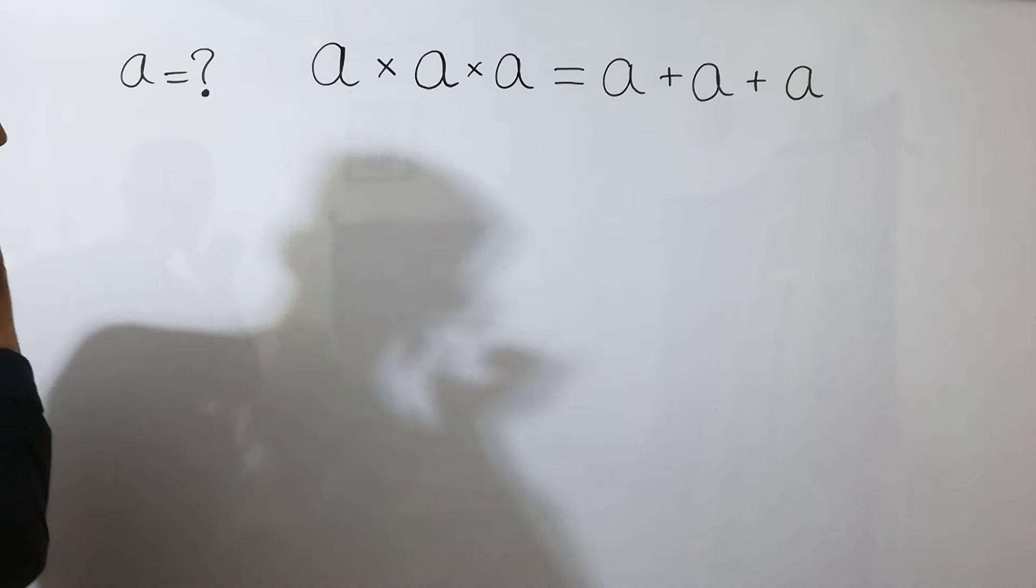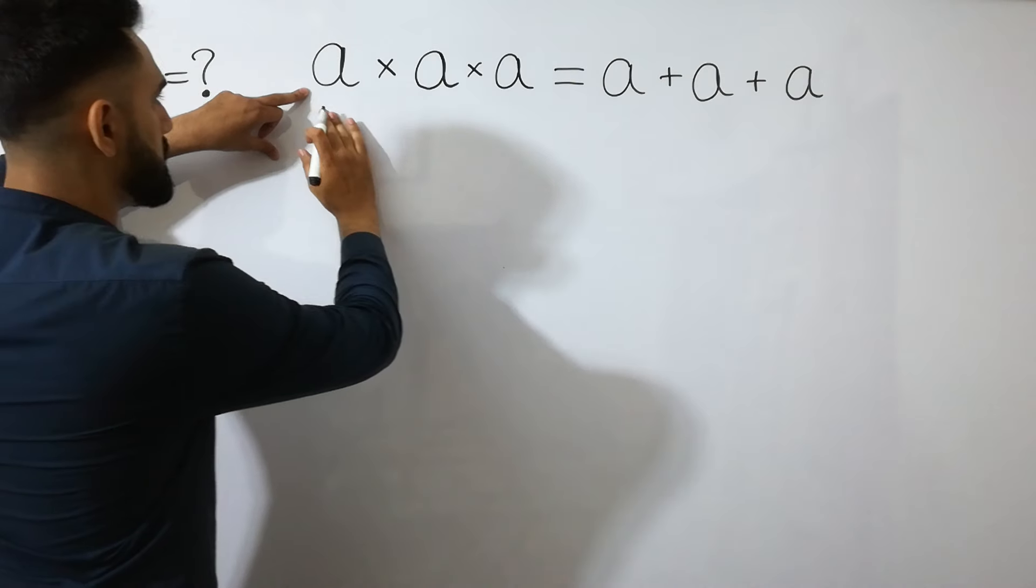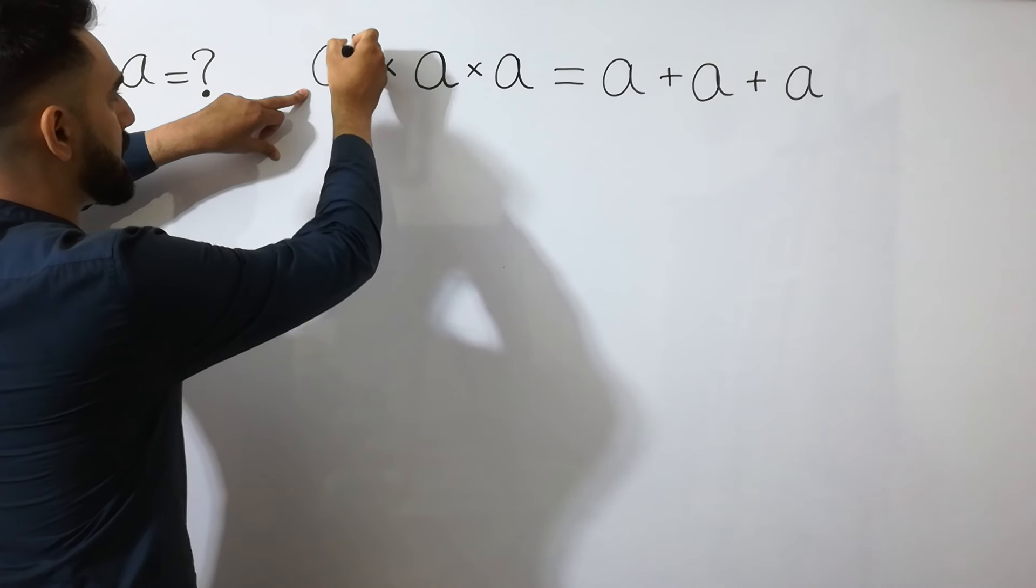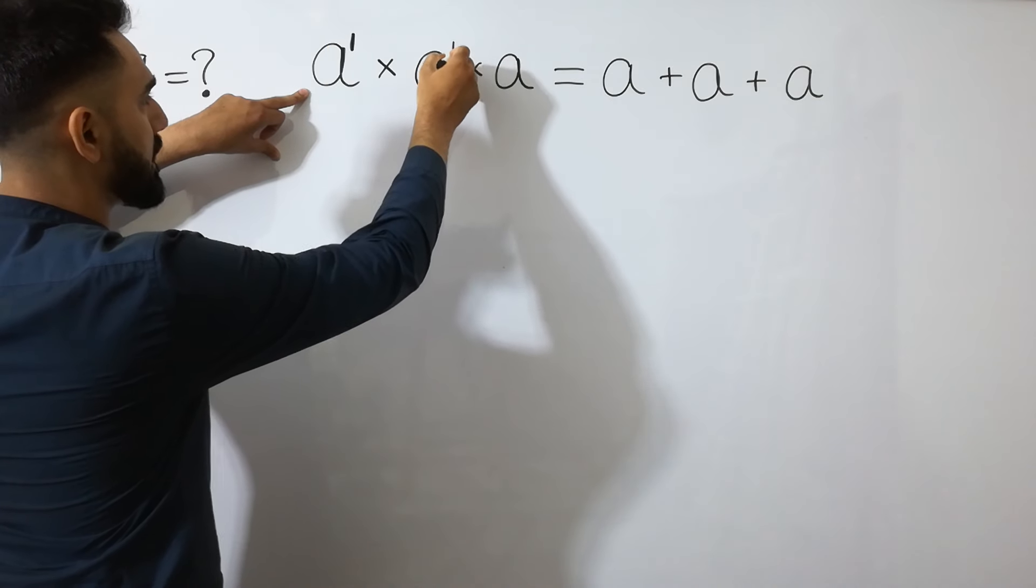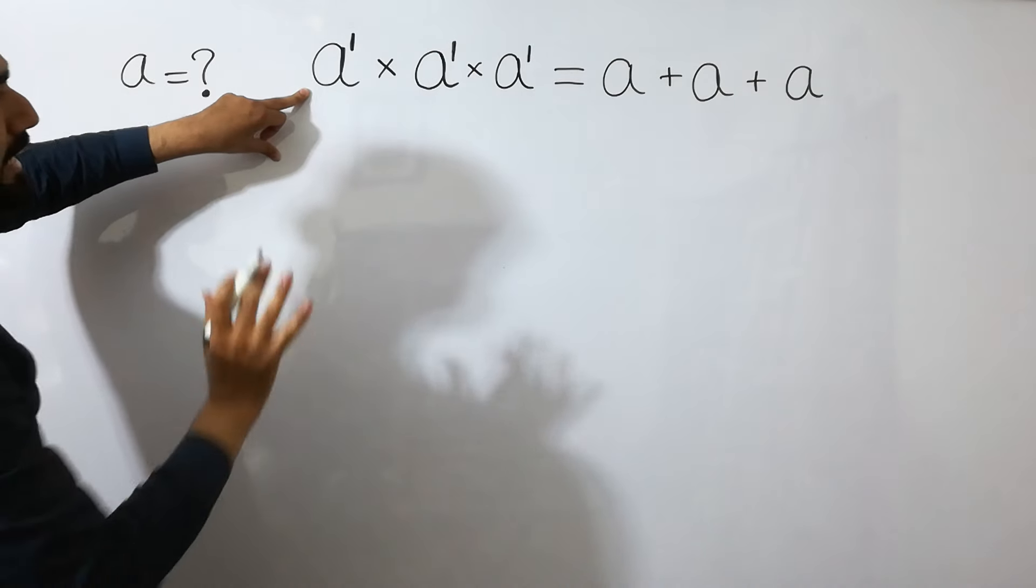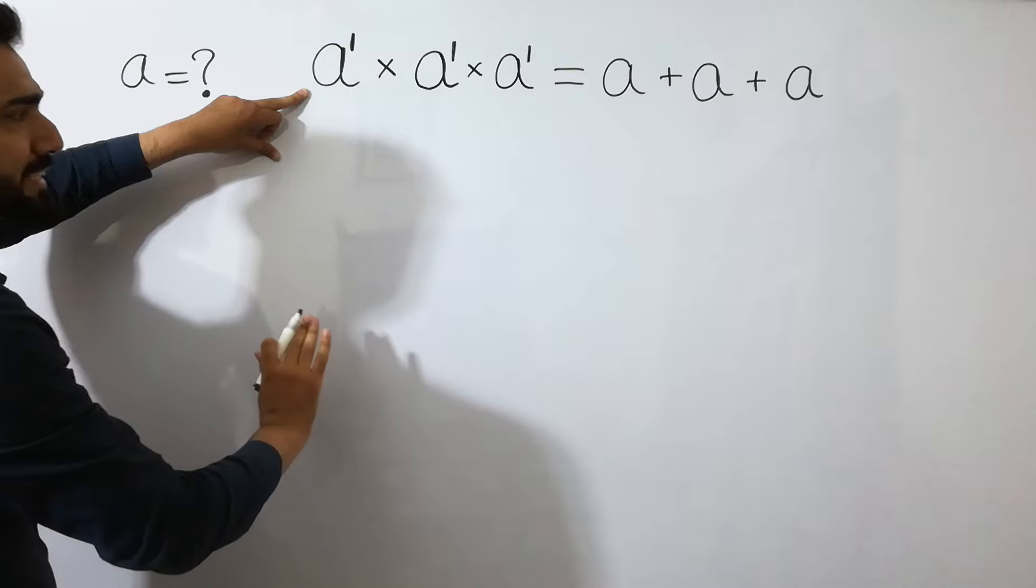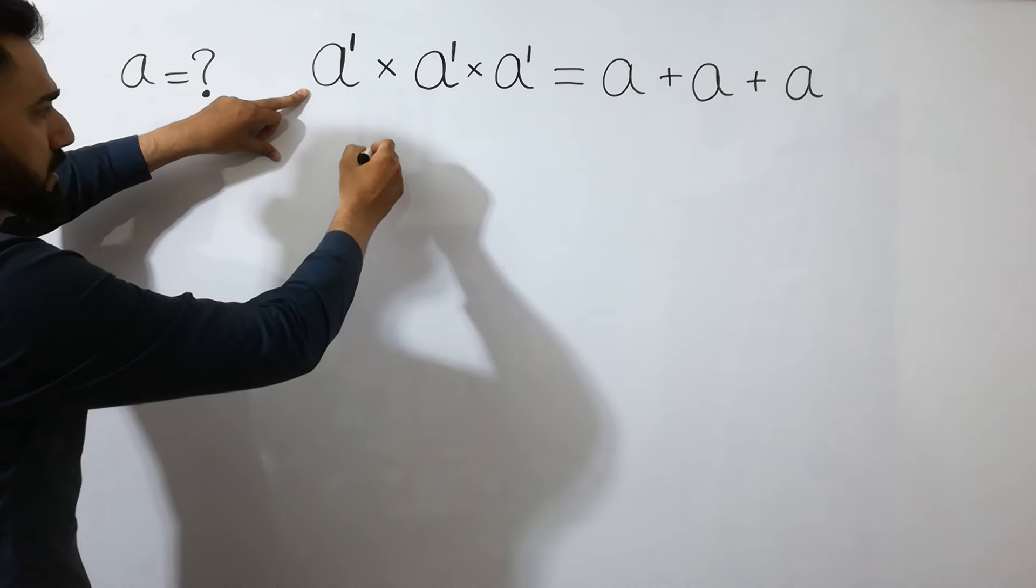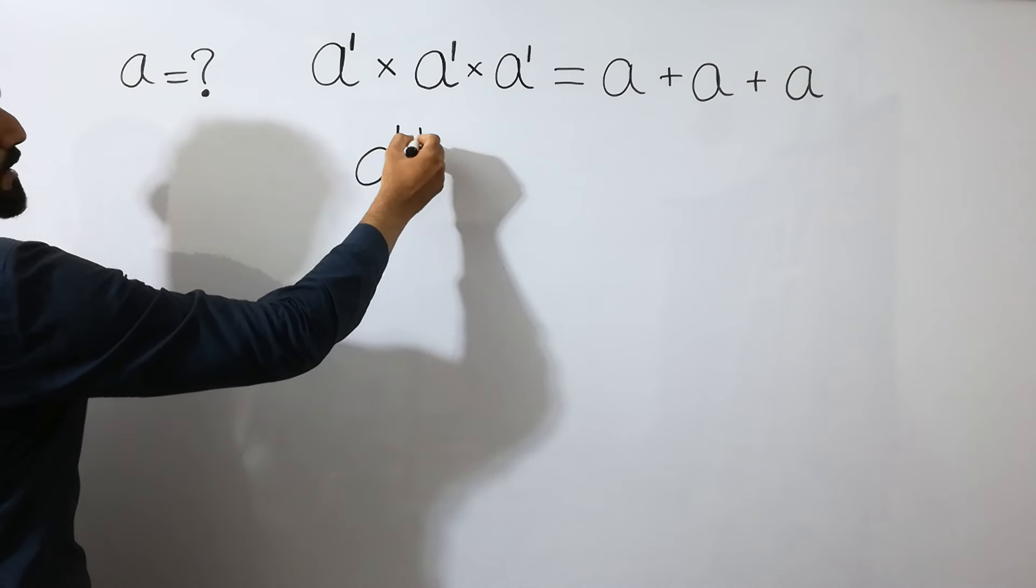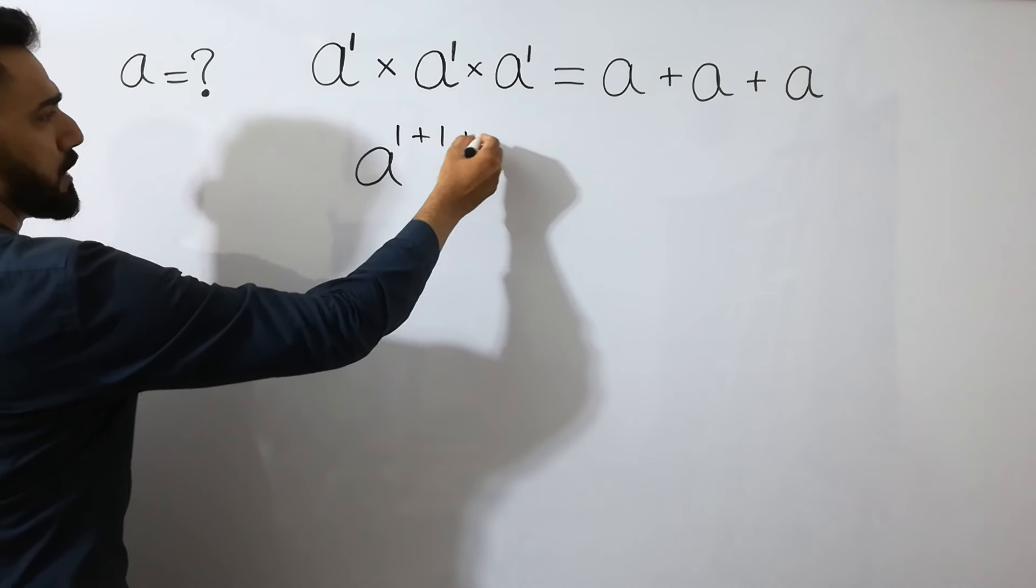You can see here, base are same. And look, each value of A has power of 1. So we can add them, base is same, then power is add. So we can write here, 1 plus 1 plus 1.